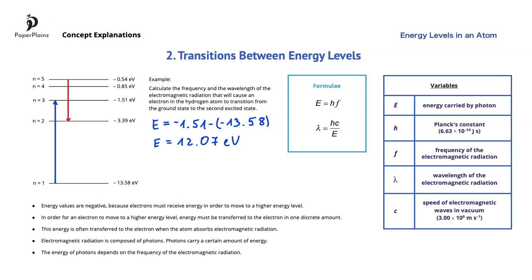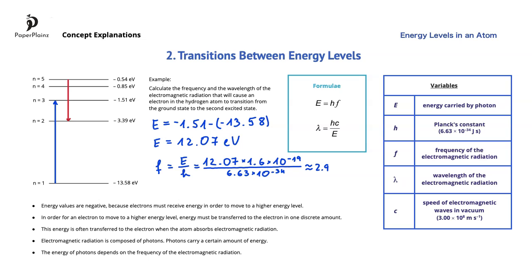To calculate the frequency, we rearrange the first equation, which gives us f equals E over h. We have to convert the energy from electron volts into joules by multiplying 12.07 by 1.6 times 10 to the power of negative 19. This is then divided by Planck's constant, which is 6.63 times 10 to the power of negative 34. Carrying out this calculation gives us approximately 2.91 times 10 to the power of 15 hertz.